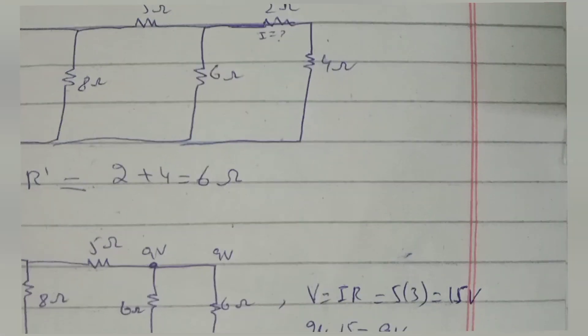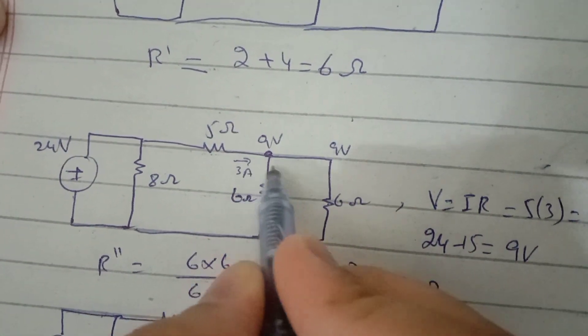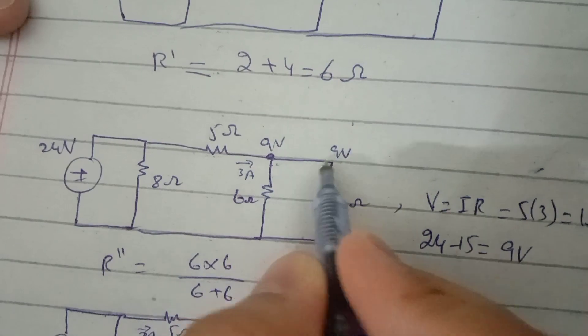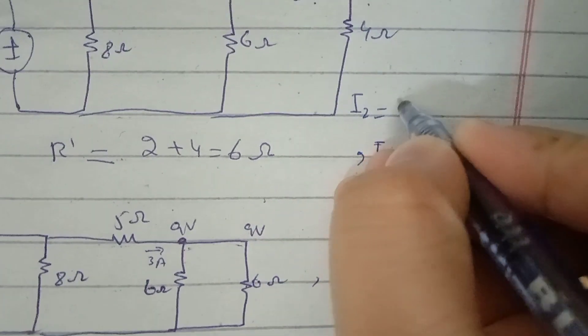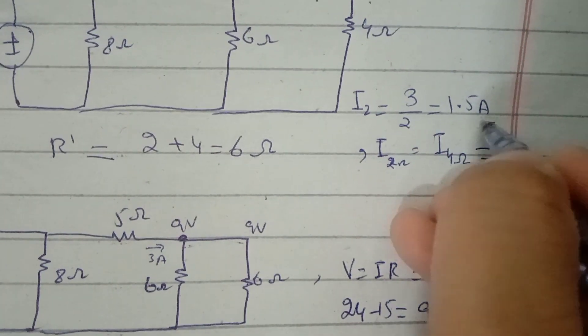After partitioning in two, hence 3 divided by 2 equals 1.5 amperes. This 1.5 ampere will flow through 6 ohm and 6 ohm resistors, and consequently through 2 ohm and 4 ohm also because the circuit then becomes in series.